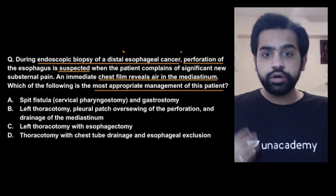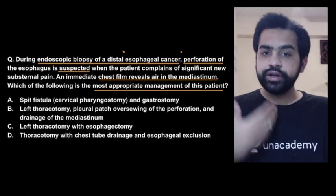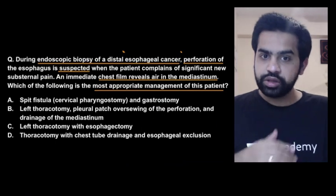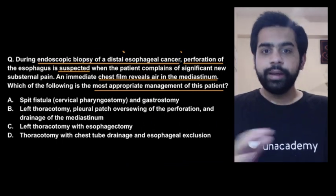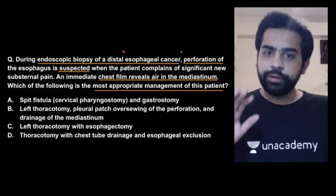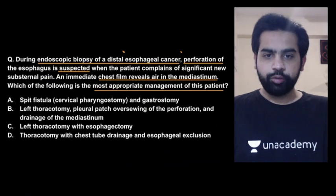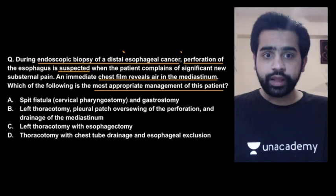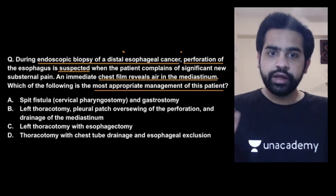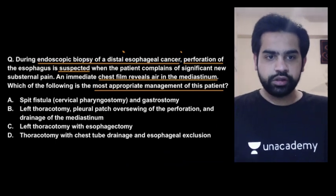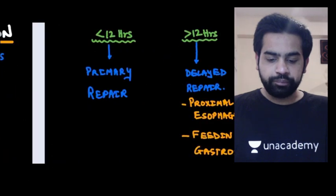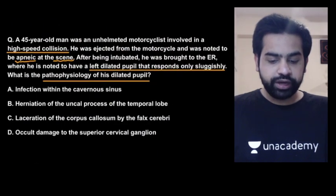Will you perform a gastric conduit and anastomosis at the same time? Maybe not. But you will have to remove the esophagus at this point. The confusion narrows to options B and C — if the patient had no underlying pathology you would choose B, but here with esophageal carcinoma you must go for esophagectomy.